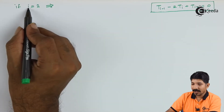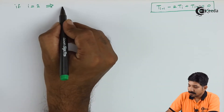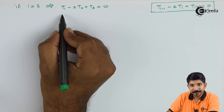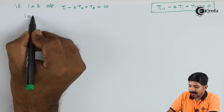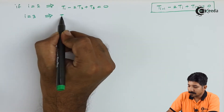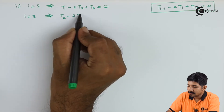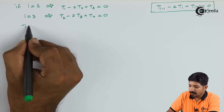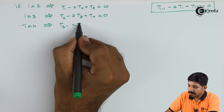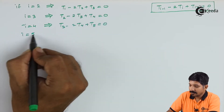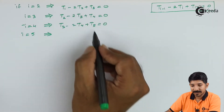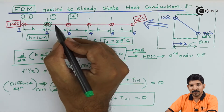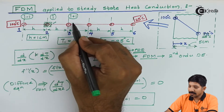Let us put the value of i equal to 2. The equation T(i-1) minus 2T(i) plus T(i+1) = 0 becomes T1 minus 2T2 plus T3 = 0. Similarly, putting i equal to 3 gives T2 minus 2T3 plus T4 = 0. Continuing this process, we write down equations for nodes 2, 3, 4, and 5.